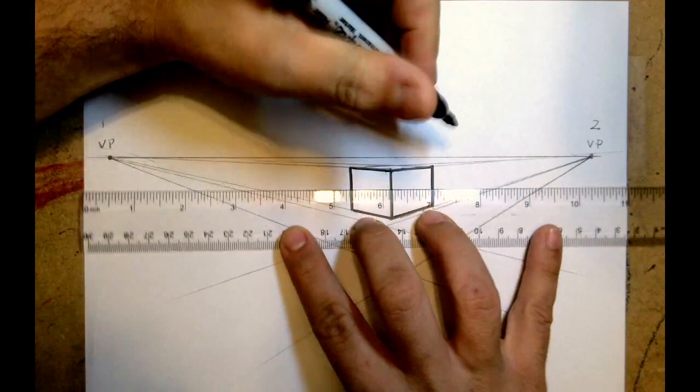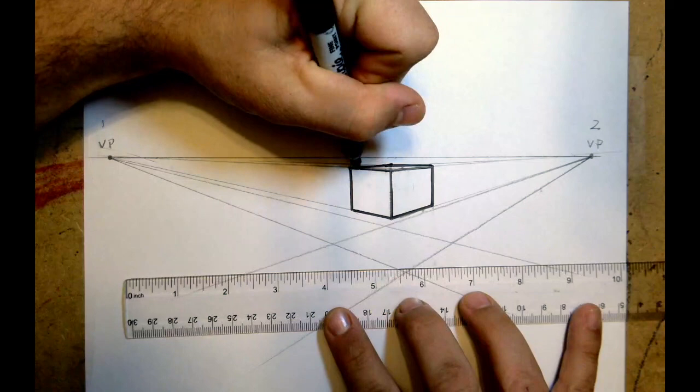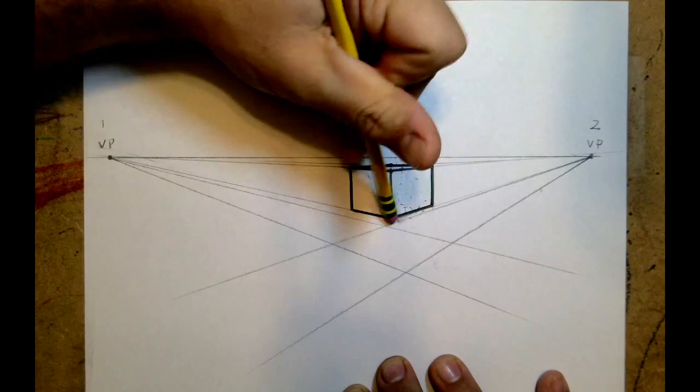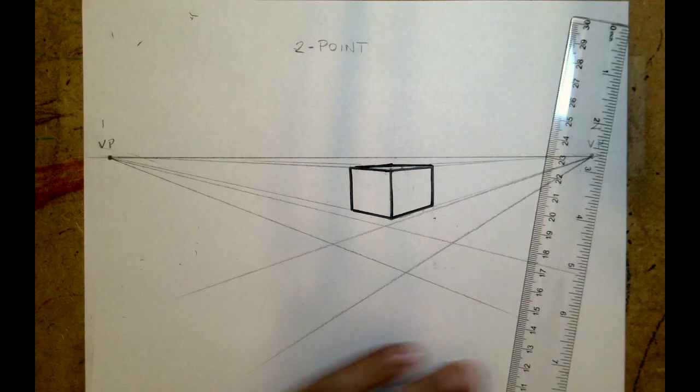As we move forward, you're going to notice how it will start to look like a building. Feel free to erase lines as you go to just get a little bit more of a visual of what you're creating. As I move forward now, I'm going to create more buildings of various heights.